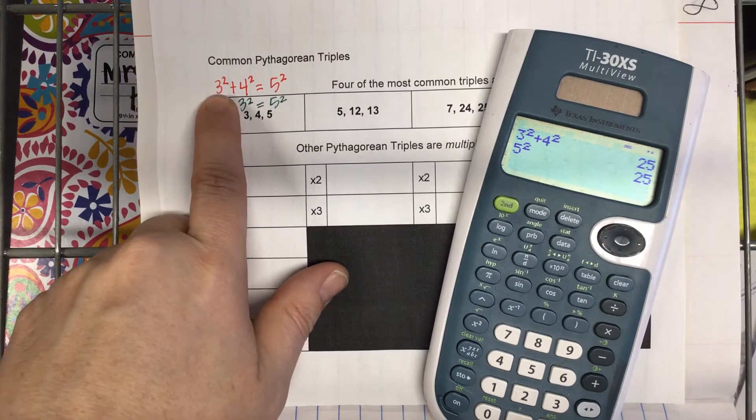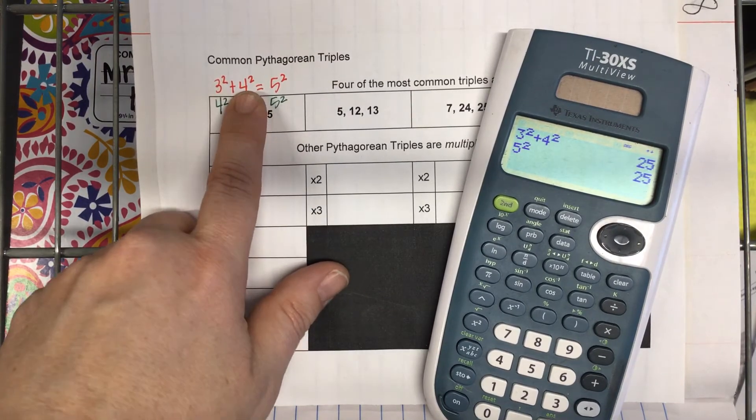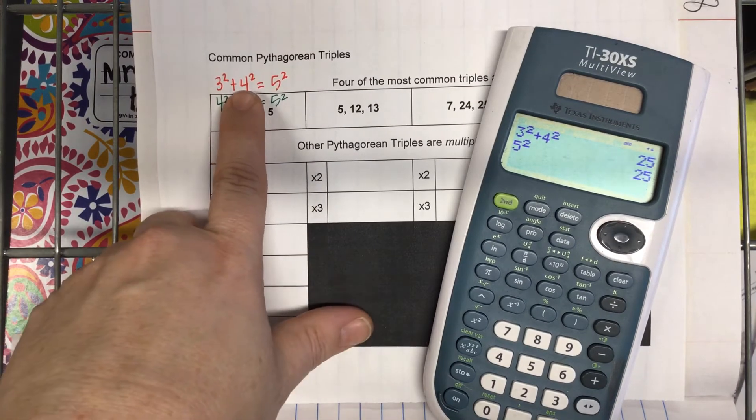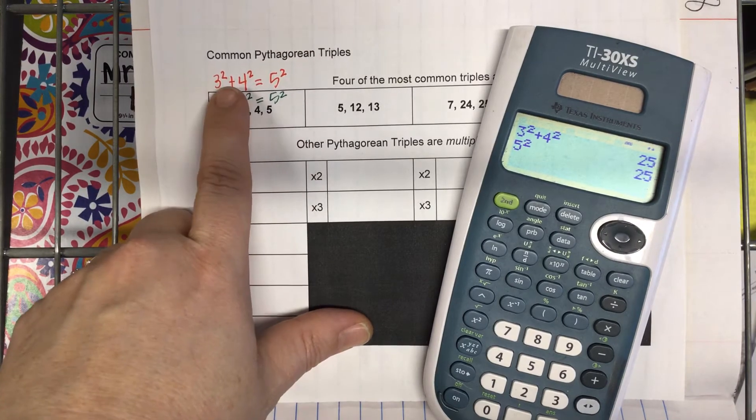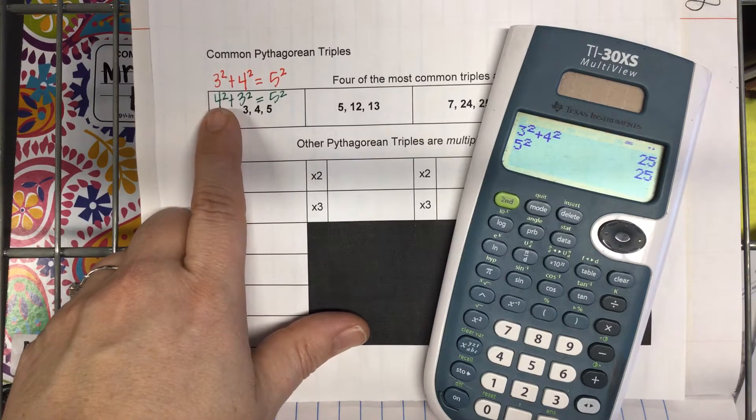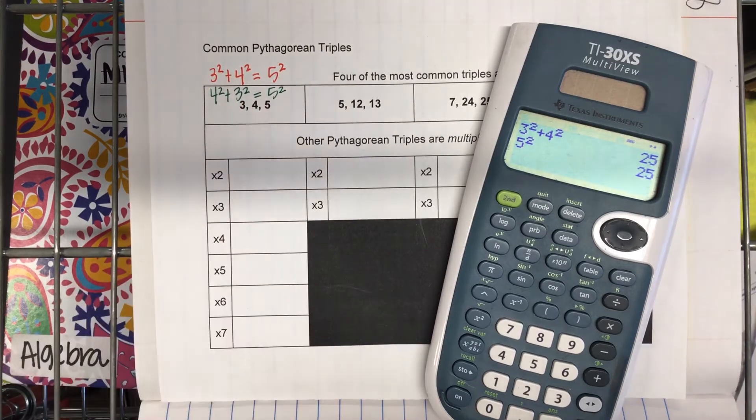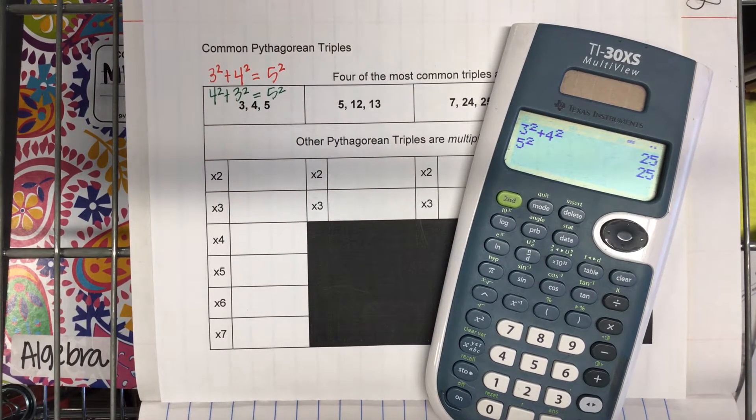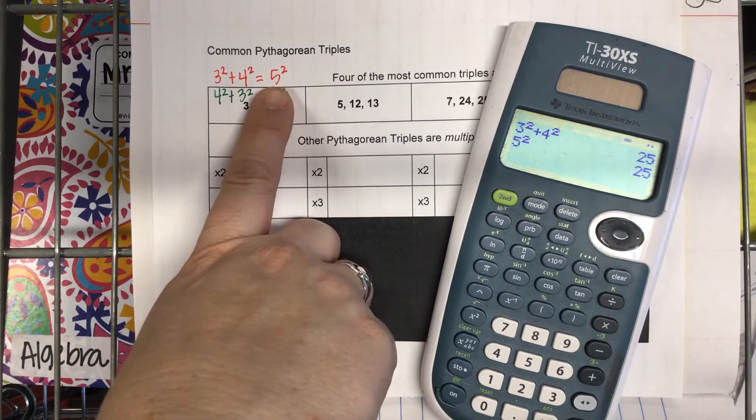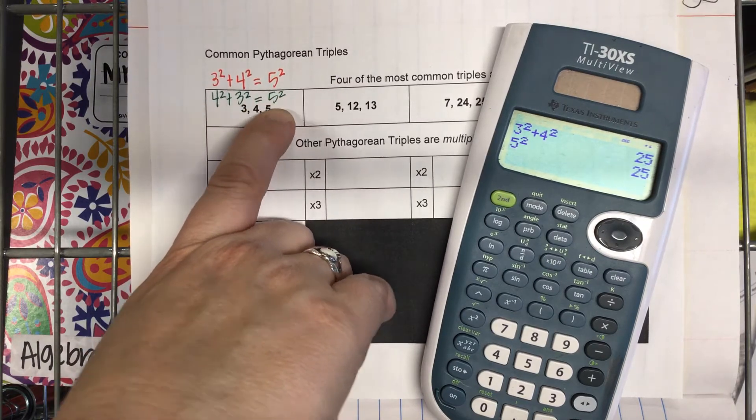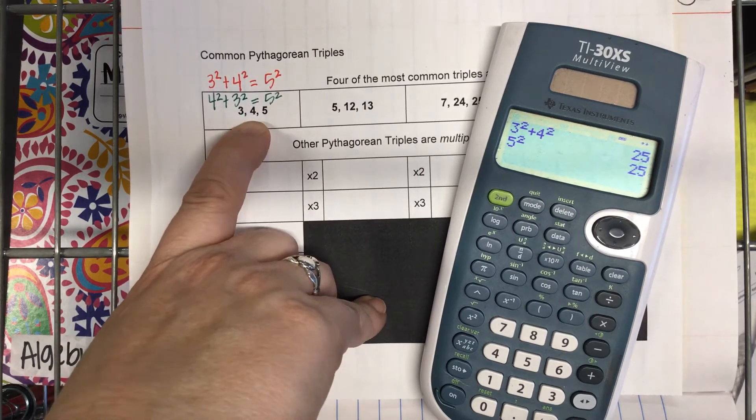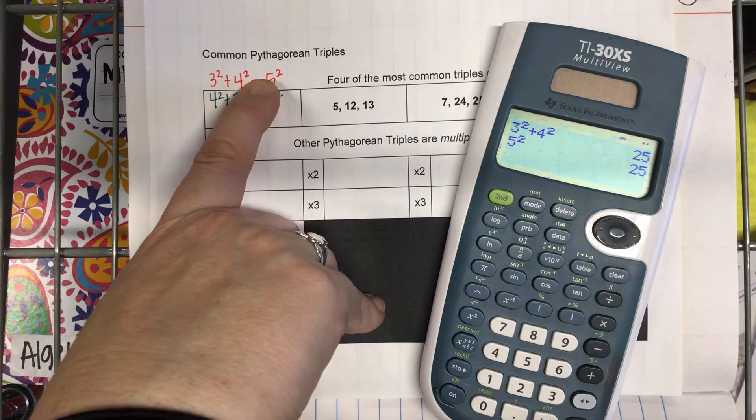What property tells you that three plus four is the same thing as four plus three? The commutative property of addition. So really, this is nine plus sixteen. Do you agree? Because three squared is really nine, and four squared is really sixteen. So nine plus sixteen, in fact, is the same thing as sixteen plus nine. They're the same thing. You have to put the longest side in for C. You have to put the longest side in for C. It's not negotiable.